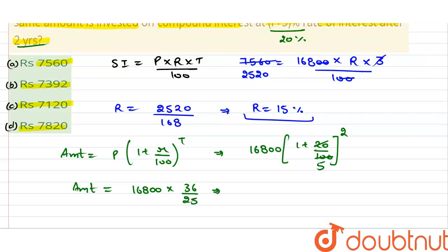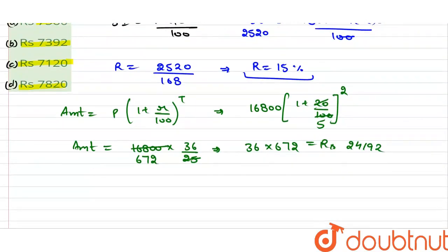इसे multiply कर लेते हैं. पहले इसे 25 से divide कर लेते हैं. तो 25 कितने पे कट होगा? 25, 6 to 150. तो यह कितना बचा? 18 बचा. तो 18, 180 हो गया. फिर कितने पे जाएगा? 7 पे 75 और यह 2 पे. तो यहाँ पे लिख सकते हैं कि 36 into 672. यह amount हो गया हमारे पास. अब multiply करेंगे तो 36 into 672 की value होगी 24,192. तो amount क्या आगया? Rupees 24,192. हमसे question में क्या पूछाएगा? यह सिर्फ interest — तो CI कितना हो जाएगा? 24,192 minus 16,800.